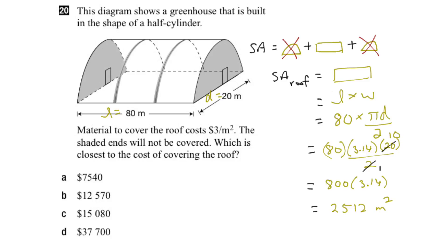Now if you didn't have a calculator handy, you could estimate π to be 3, and that would give us about 2,400 meters squared. And because the question is asking which is closest to the cost, I think that would be a good estimate.